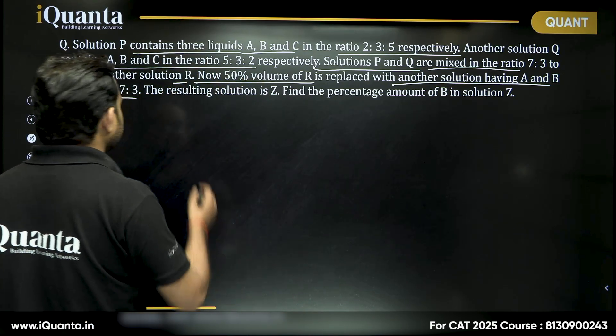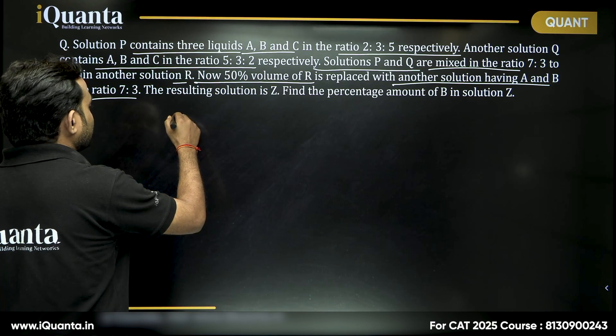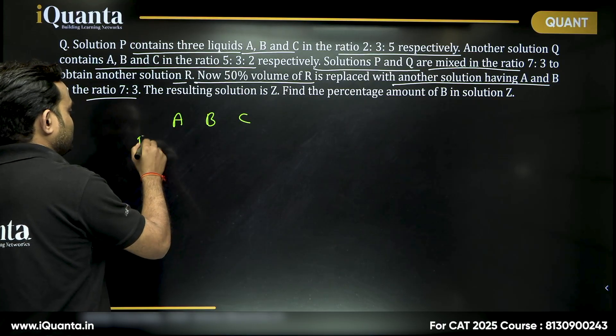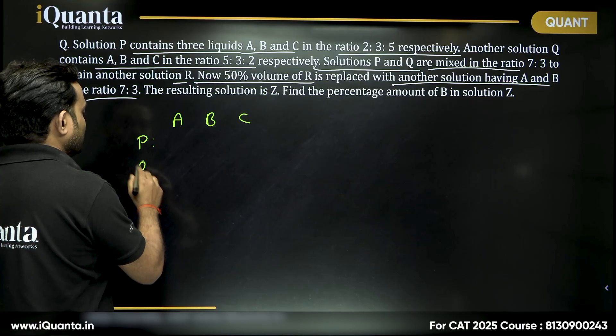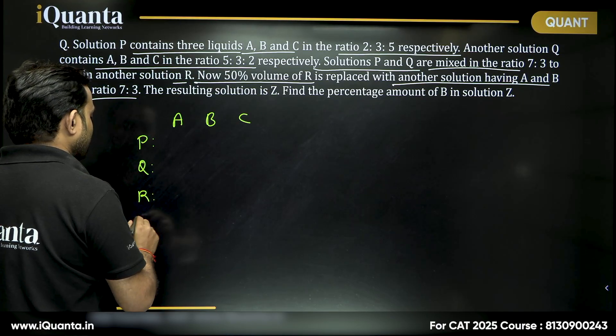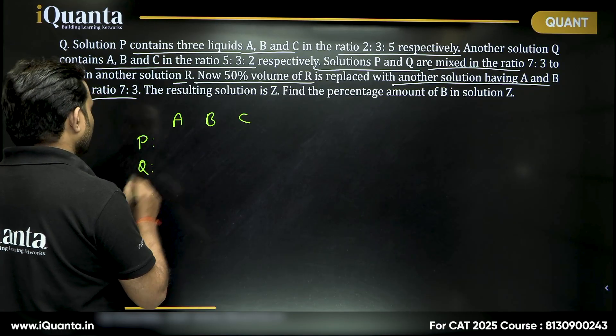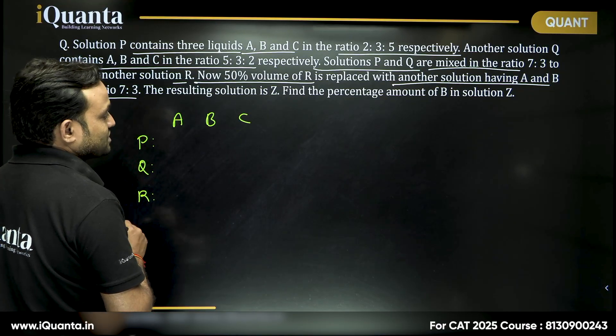So, what we can write is that we have three different solutions: first solution P, then solution Q, then we have solution R, and then we have solution another solution that is unknown.